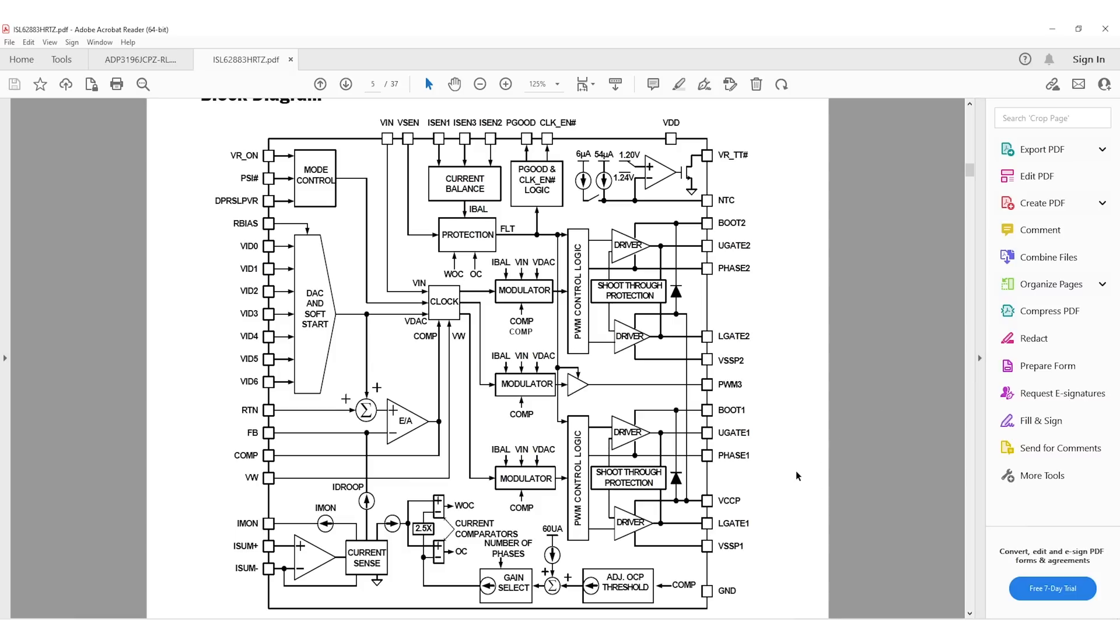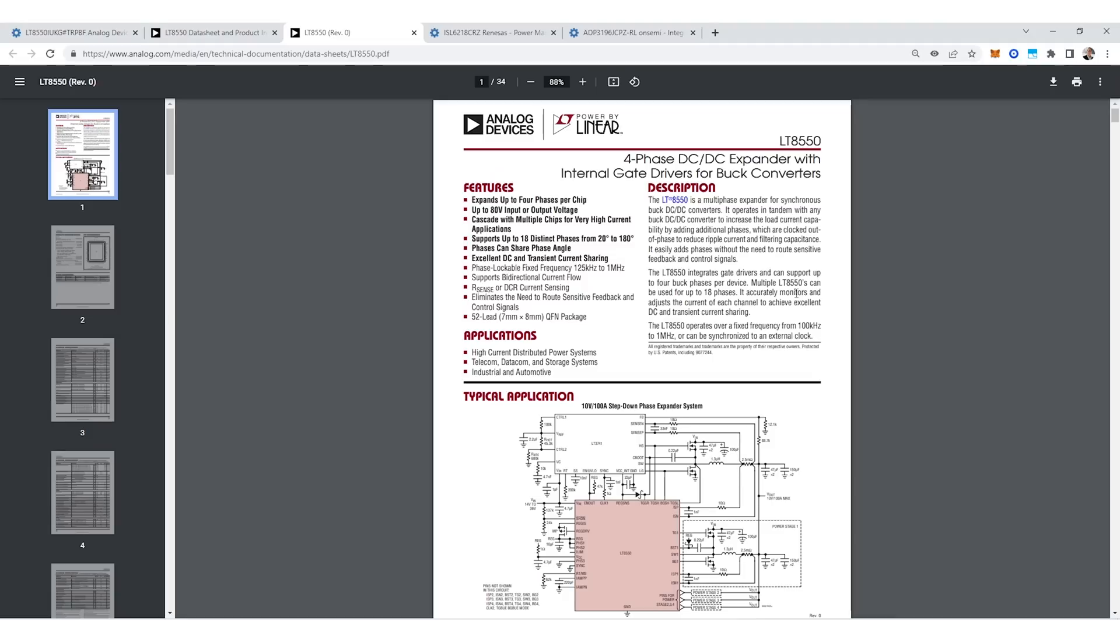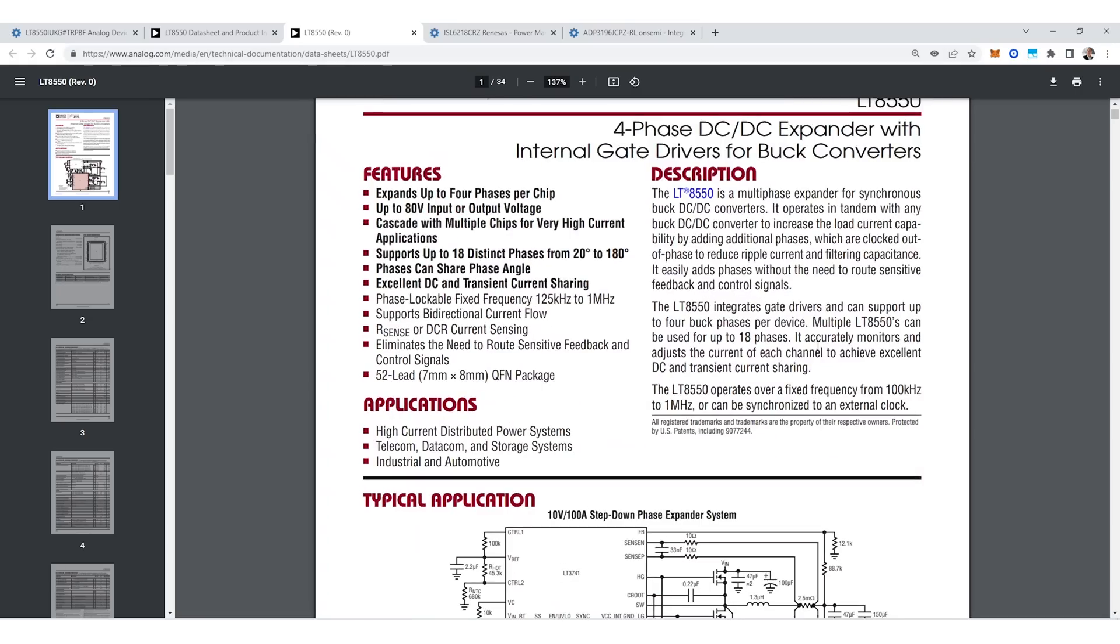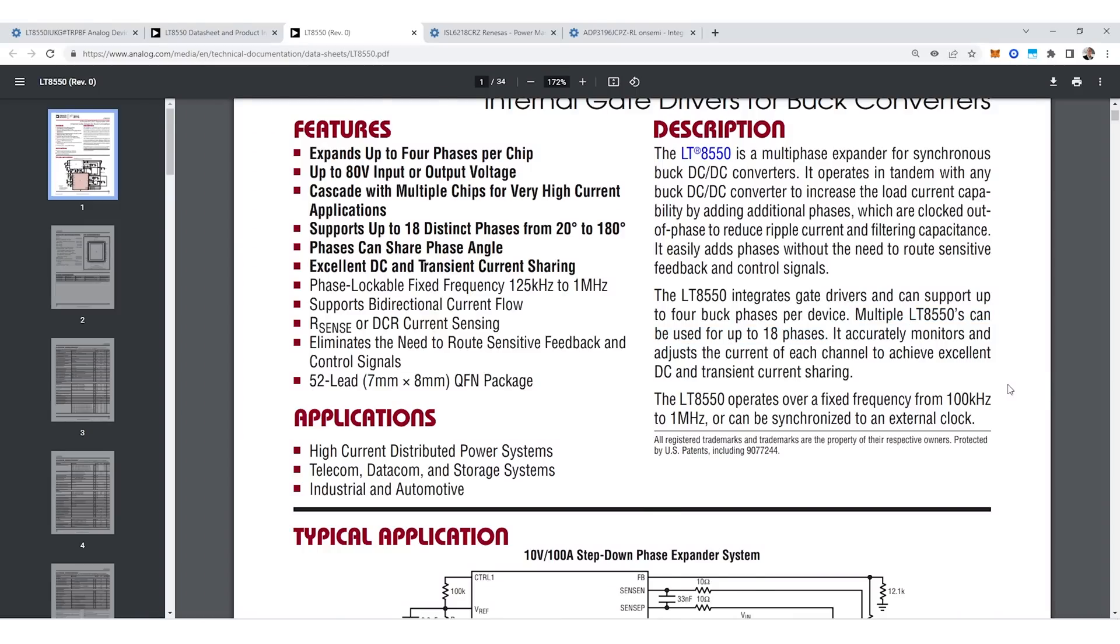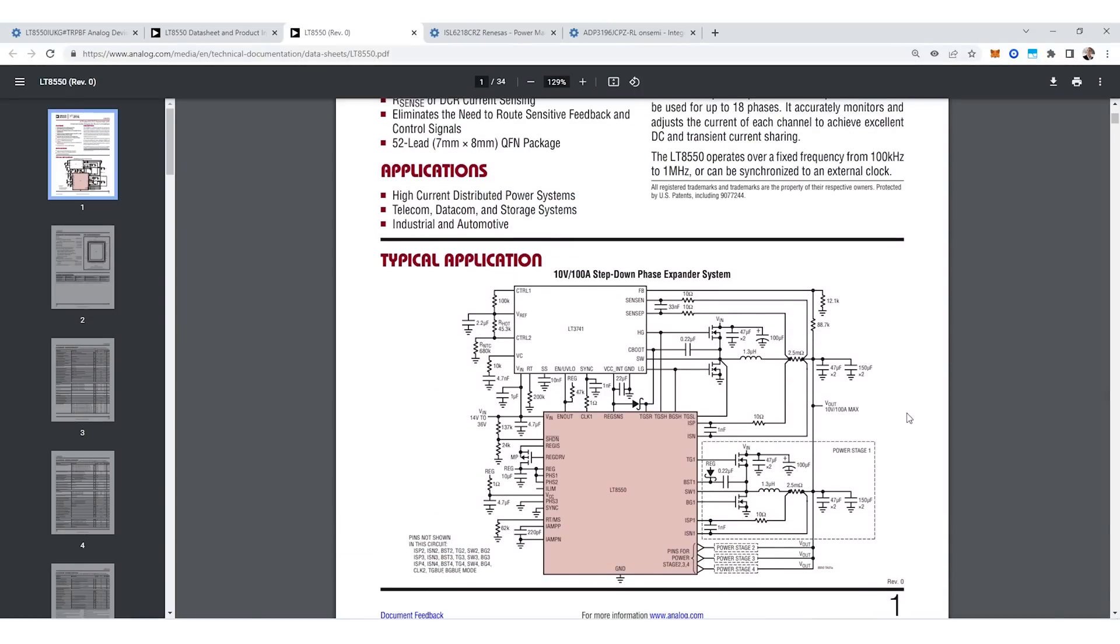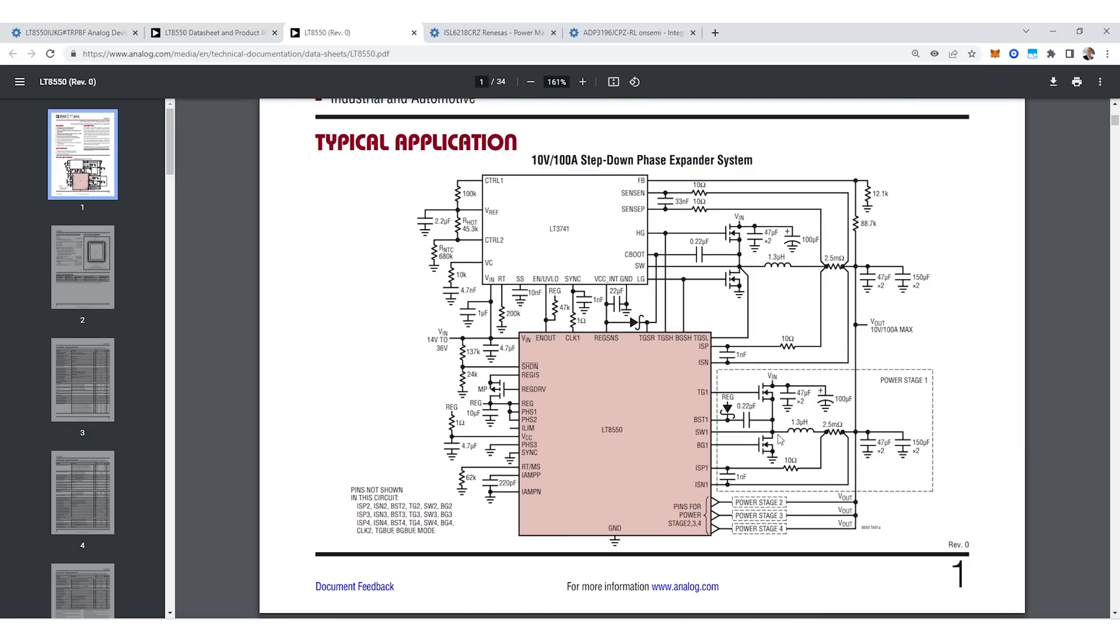Here's another great example from Analog Devices. This particular component can support up to four phases with a single chip however in the description you can see here that you can use multiples of these to support up to 18 phases. So you can get a lot of power out of these and again the entire point here is to cascade all of these phases together so that you get very low ripple current even though you're drawing very high total current out of these devices. You can also see here that you have a set of MOSFETs in each power stage however again the driver side for all of this is built into the chip so they've tried to reduce the amount of extra work you need to do to use this type of chip to get to very low ripple.